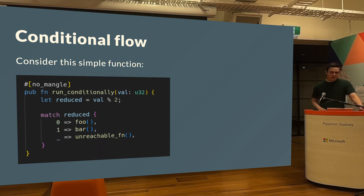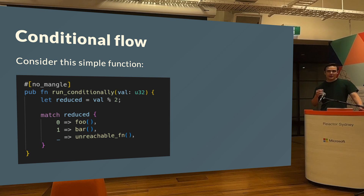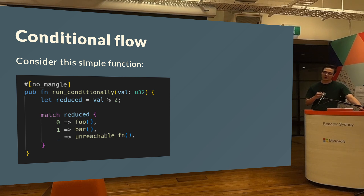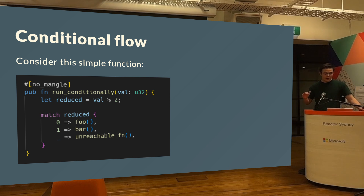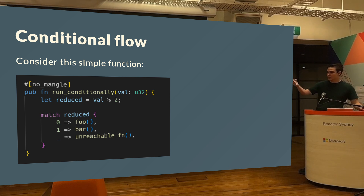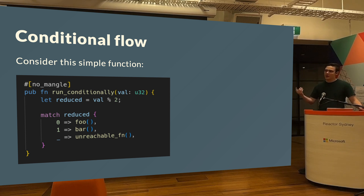The first example is conditional flow. Your compiler is really good at understanding what conditions and operations lead to which branches. In this code, you can see I'm making a match statement on an integer, matching based on 0, 1, and unreachable. As a human, you know that the unreachable branch is indeed unreachable, because when we modulo by 2 you only get 0 or 1.